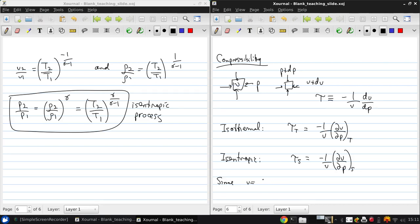Since the specific volume is just the inverse density, then we can also write this compressibility as 1 over rho d(rho)/dp. So that d(rho) equals rho tau dp.